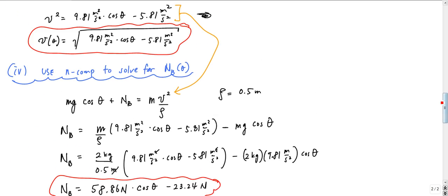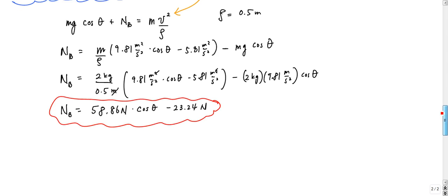You can do some other fancy stuff with this — you can look at when the normal force on the board is going to be a maximum. To find that critical point — remember critical point calculus — that's dN_b over dθ. You take the derivative of this, set it equal to zero, and solve for theta.